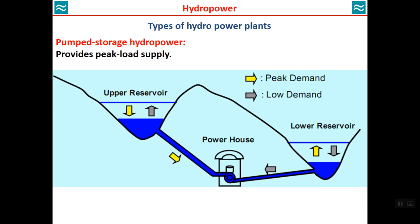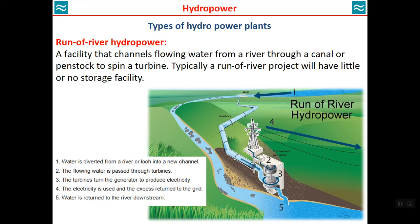A very interesting type is pumped storage hydropower. It has two reservoirs — upper and lower. When demand on the power grid is low, water is pumped from the lower reservoir to the upper reservoir for storage. During peak demand times, such as summer afternoons or evenings, water is directed from the upper reservoir back to the lower one through turbines to generate power. This is a very interesting type of hydropower plant.